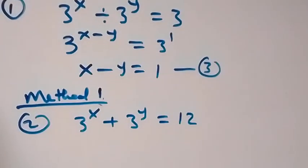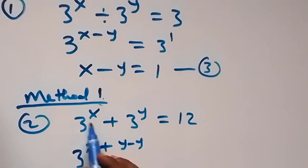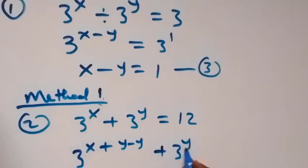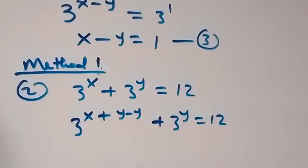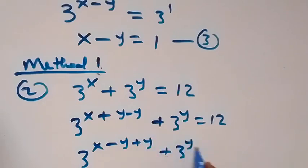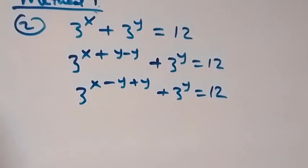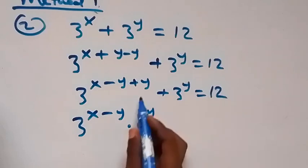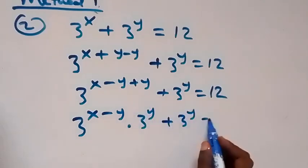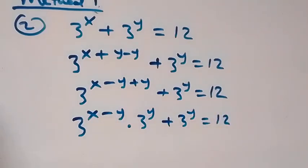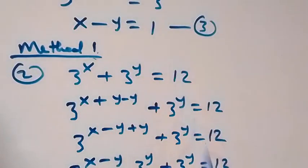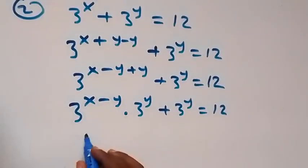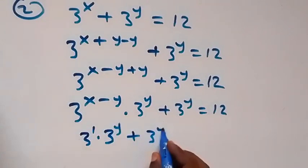From here, we can write 3 raised to power x as 3 raised to power (x minus y) plus y, which is the same as 3 raised to power x. Then plus 3 raised to power y equals 12. We can separate this as 3 raised to power (x minus y) plus y, plus 3 raised to power y equals 12. In the next step, using the laws of indices, this becomes 3 raised to power (x minus y) times 3 raised to power y, plus 3 raised to power y equals 12. From equation 3, x minus y equals 1, so we substitute: 3 raised to power 1 times 3 raised to power y, plus 3 raised to power y equals 12.